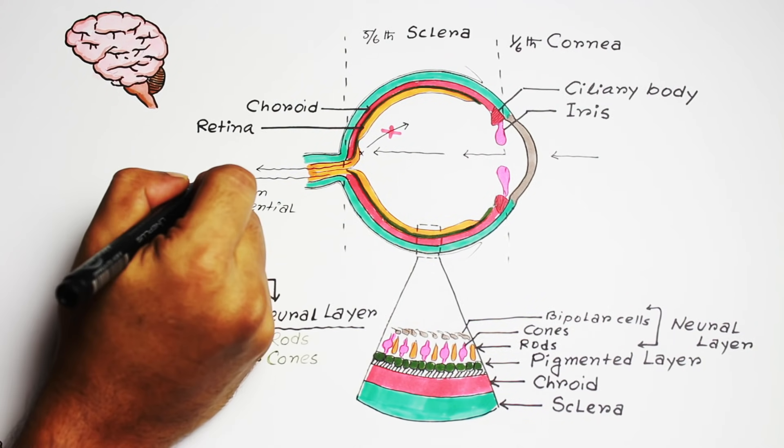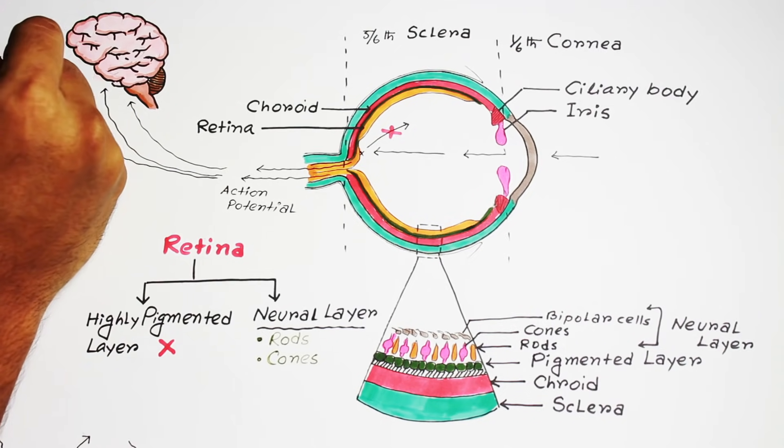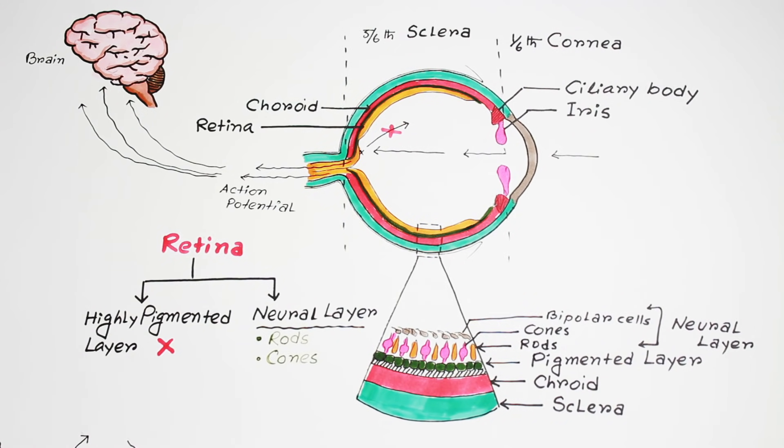This action potential is electrochemical energy. So, rods and cones basically convert electromagnetic energy into electrochemical energy. This action potential is now transferred to the central nervous system for processing so that we can see an object.